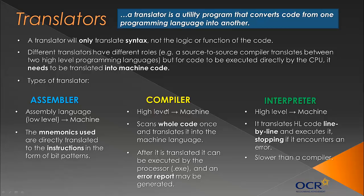Technically an interpreter is slower — if you had a program with no errors, using an interpreter instead of a compiler would be slower. But if your error is really early on, it's not ideal to use a compiler, because a compiler goes through the whole program just to tell you there was an error at the start. So they each have their trade-offs.